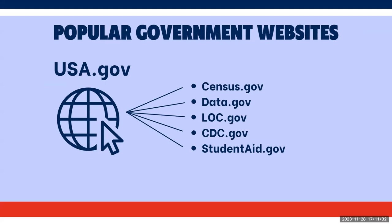Another popular government website is USA.gov. It is the web portal of the U.S. federal government. From there, you can connect to other websites, some of which you might be familiar with, like studentaid.gov, CDC.gov, which is the Centers for Disease Control, and loc.gov, which is the Library of Congress. It's very user friendly and also connects website visitors to services and information. The website also has a directory of other federal agency websites and departments, which I'll point out during the online searching demonstration.